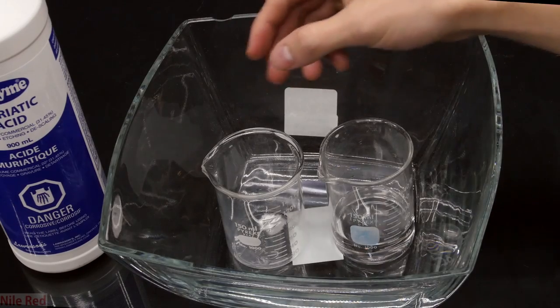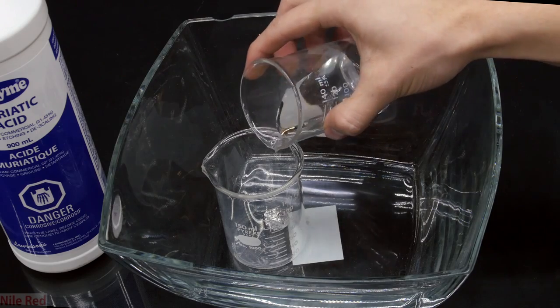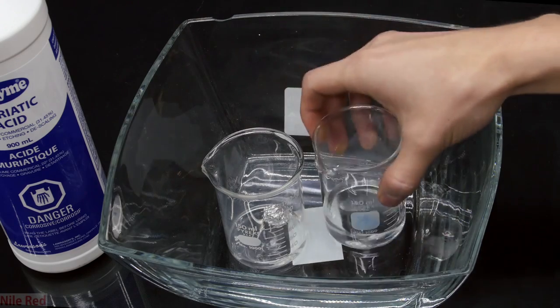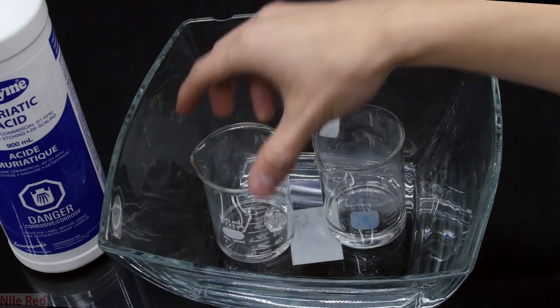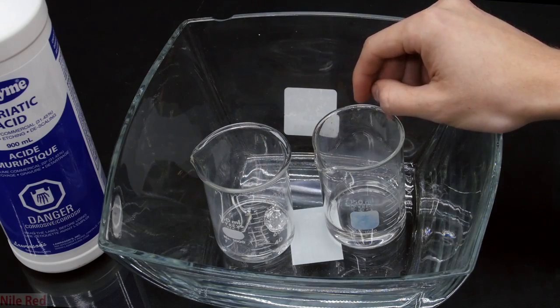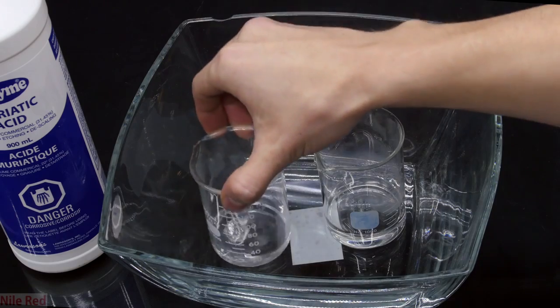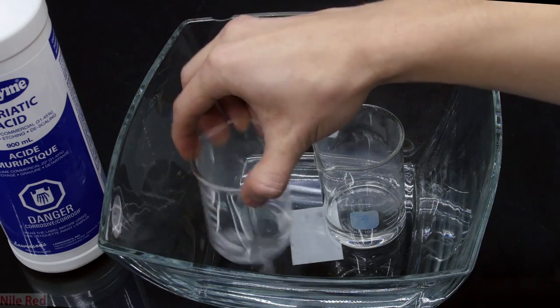I add another beaker and I place some aluminum foil inside and then on top of this, I pour in some of the acid. I did this for two main reasons: to show the violent reaction that it has with aluminum and to show you that it actually is acid that I'm pouring onto my hand.